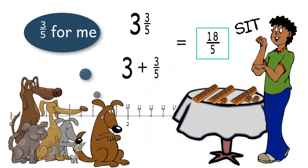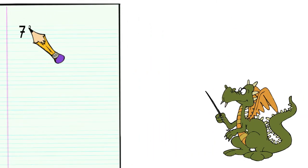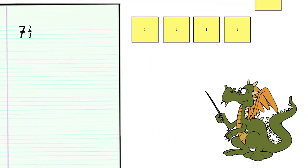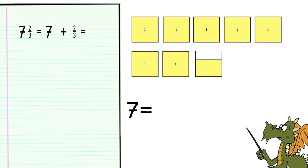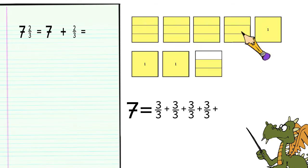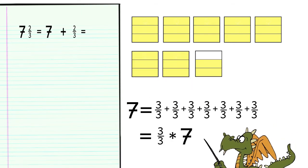So now that we know what a mixed number is, how do we convert mixed numbers to fractions? Let's start with 7 and 2 thirds. Well, 7 and 2 thirds is 7 plus 2 thirds. If we're going to write this as a fraction, then we need to divide each whole into thirds. We can think of 7 as 3 thirds, seven times.